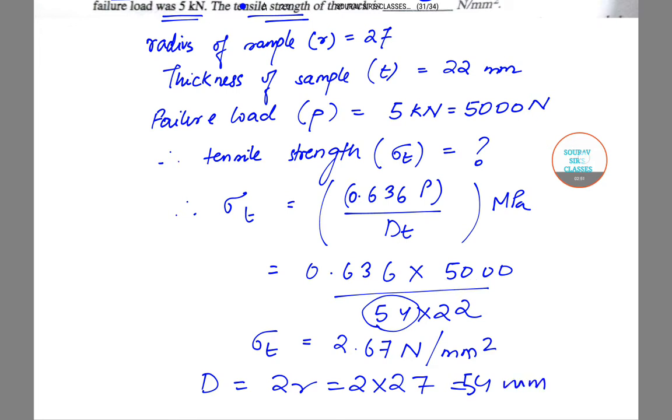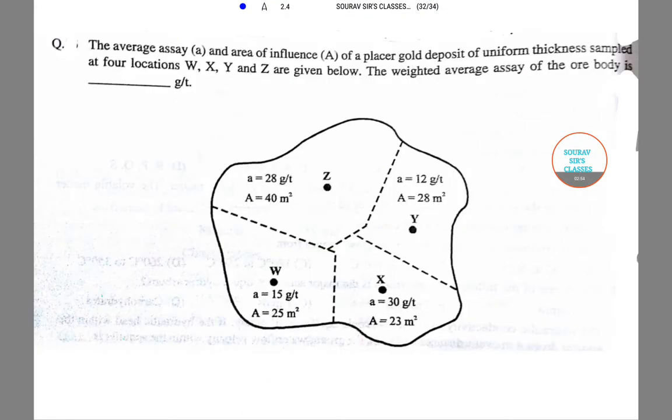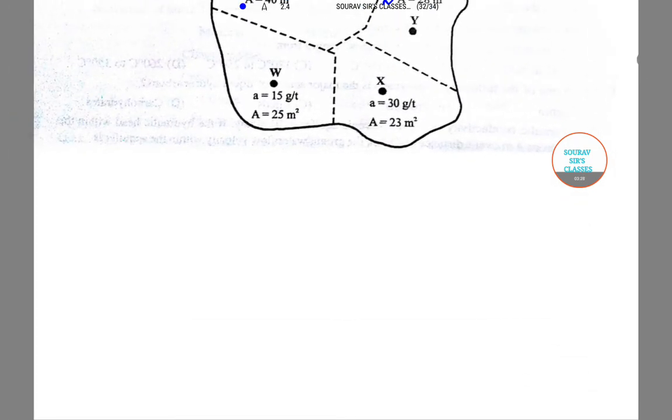Let us move on to the next question. The question says the average assay (a) and area of influence (capital A) of a placer gold deposit of uniform thickness sampled at four locations are given below. We need to comment on the weighted average assay of the ore body.